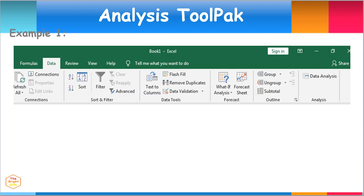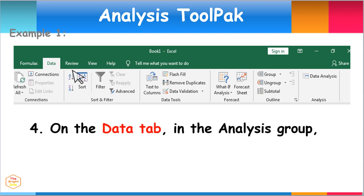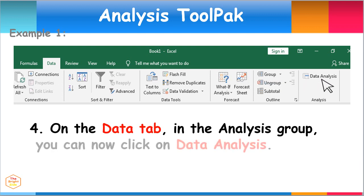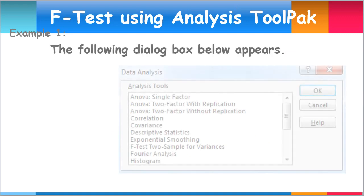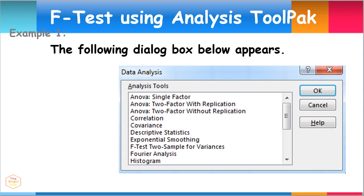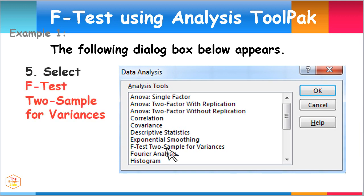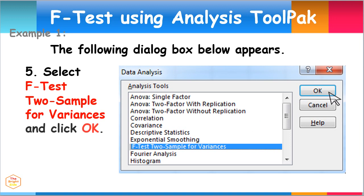Now that the tool pack has been added, click on the Data tab menu. Then in the analysis group found in the far right side of the menu, click on the Data Analysis tab. After selecting the Data Analysis tab, the dialog box appears. From the choices of different analysis tools, select the F-test 2-sample for variances, and then click OK.